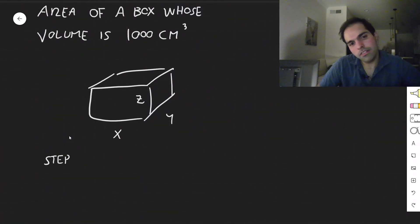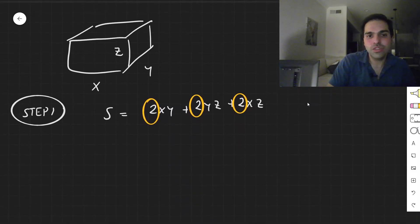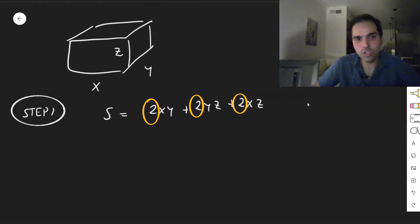So step one. Well, what is the surface area of a box? It's just 2xy plus 2yz plus 2xz. And now here's the thing. You could do this problem with the two. But if the surface area is smallest, then half of the surface area is also the smallest. So equivalently, what we can do, we can just minimize xy plus yz plus xz.